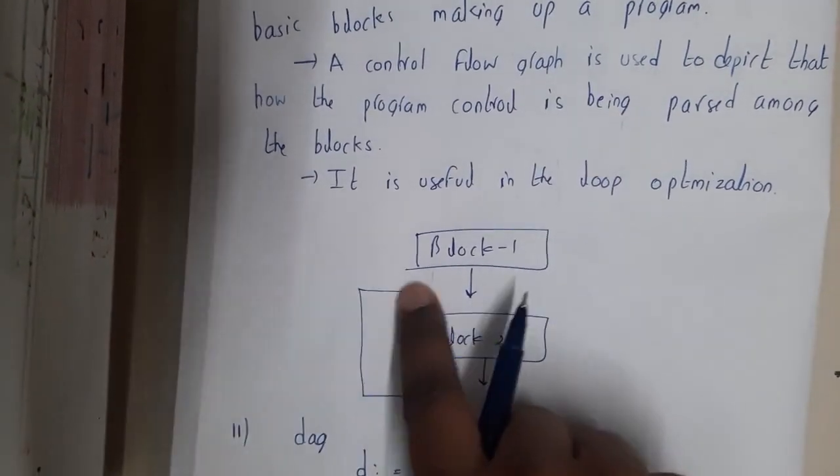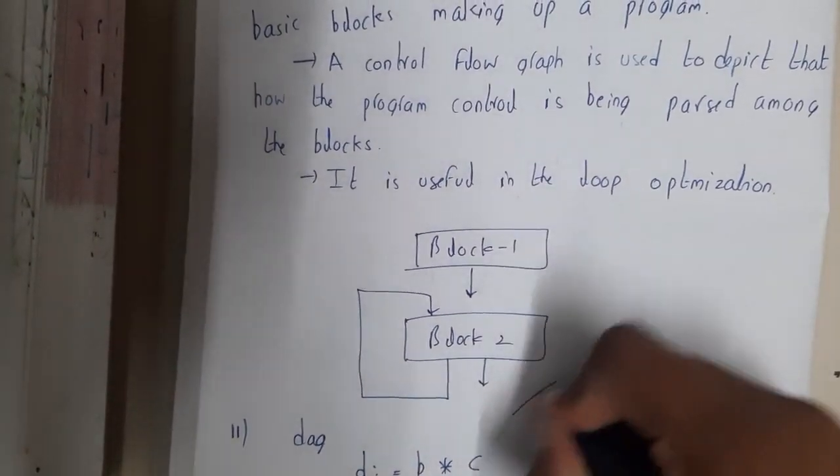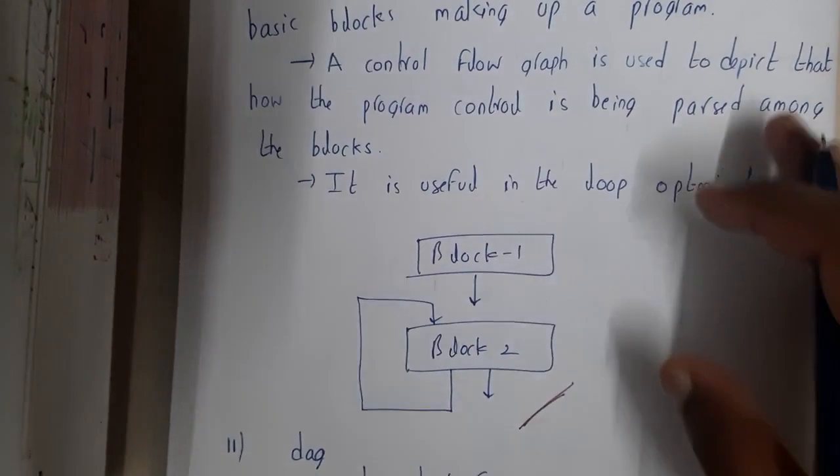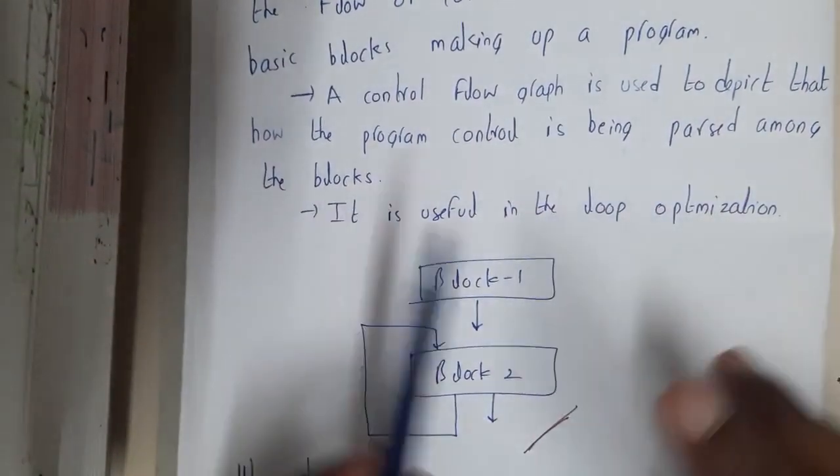If you observe here, block 1 sends the control to block 2, and block 2 assume it has a loop and it executes, executes, executes, and then it comes out. In this way, the code can be represented. I hope everyone got a clear idea on the topic.